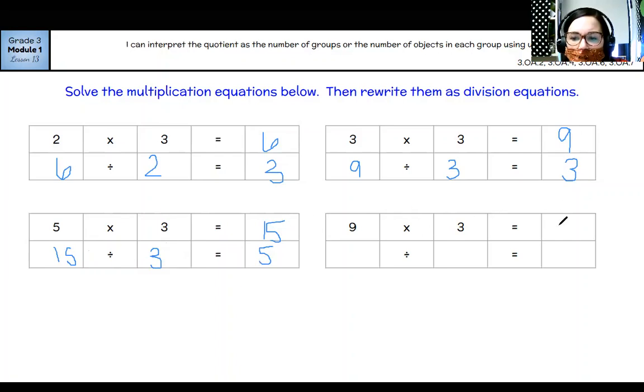And nine times three: three, six, nine, 12, 15, 18, 21, 24, 27. That's where I stop. 27. So my division equation would be 27 divided by three equals nine. I could also say 27 divided by nine equals three.